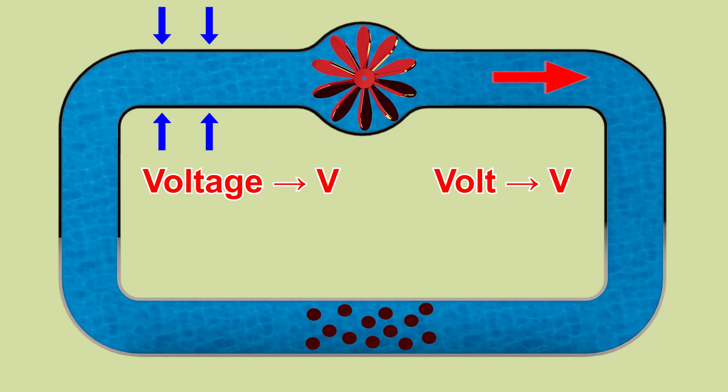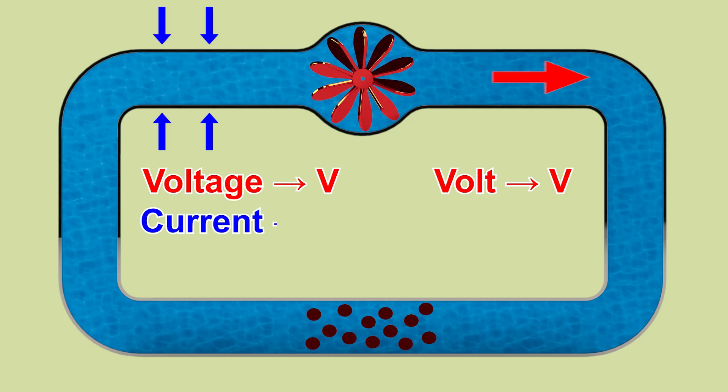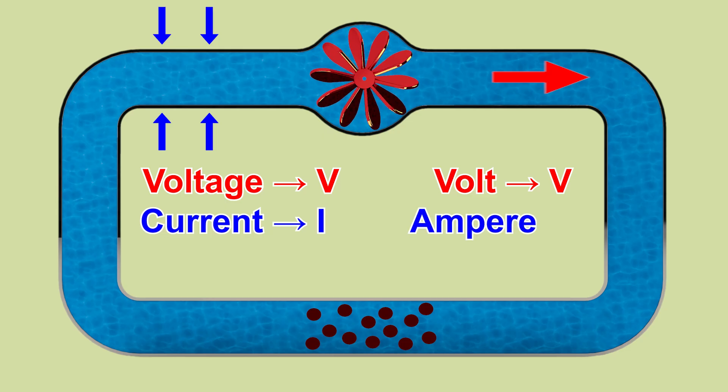The size of the pipe controls how much water can flow. That's like the current. Current is shown with the letter I, and its unit is ampere, written as A.